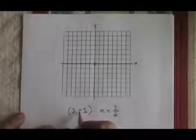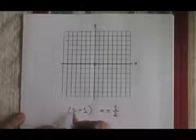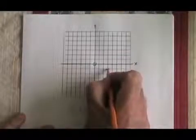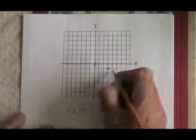The first thing I'm going to do is graph my starting point. Here I have (3, -1). 3, -1 is right here. So I put a dot and I identify the point.